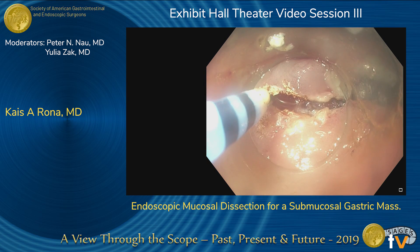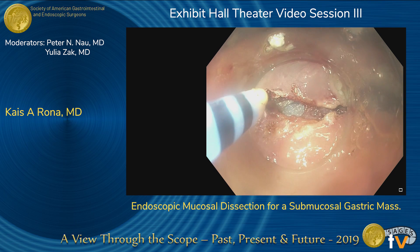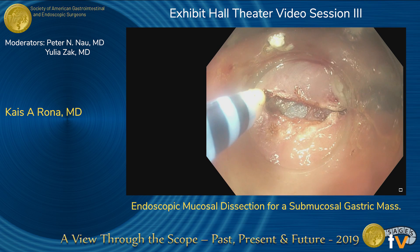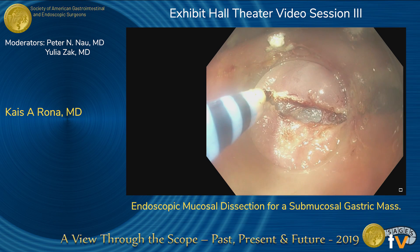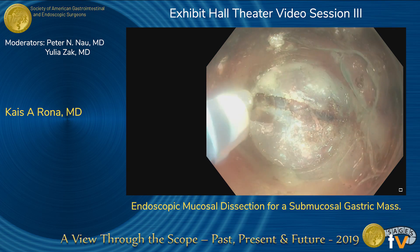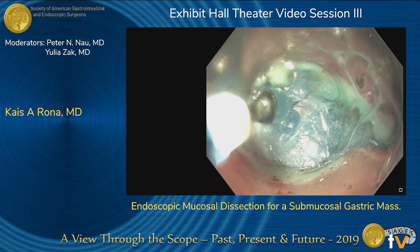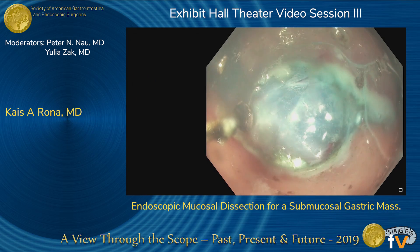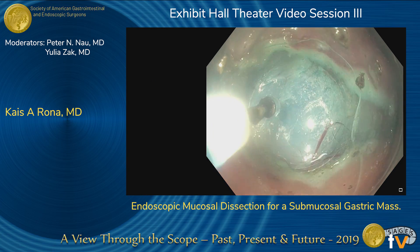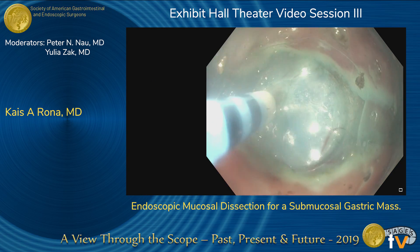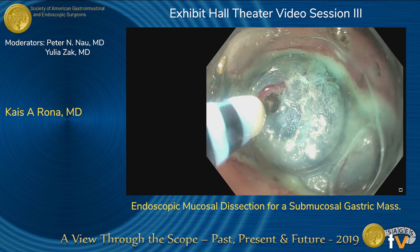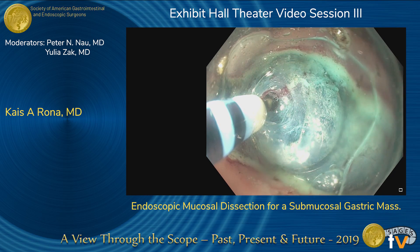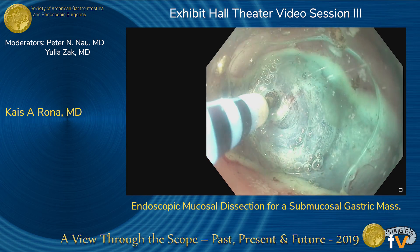We tend to make about a 180-degree mucosotomy — just large enough to accommodate the cap of the scope, similar technique to what you see in a POEM procedure. Once the mucosotomy is large enough, we apply gentle pressure into that submucosal plane, which reveals the nice alveolar submucosal plane, and we dissect into that plane.